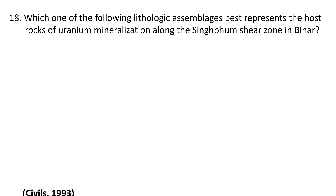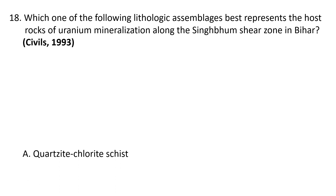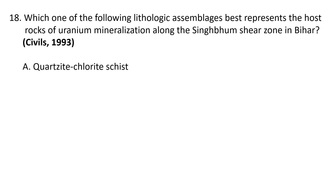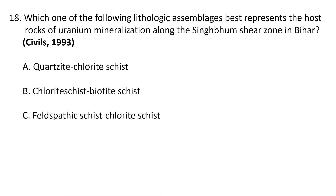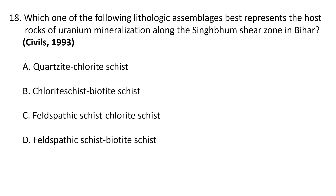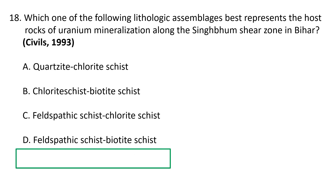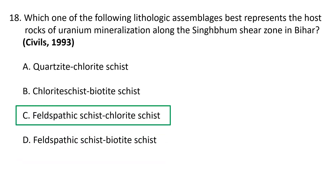Next question: Which one of the following lithologic assemblages best represents the host rocks of uranium mineralization along the Singhbhum Shear Zone in Bihar? — asked in Civil Services 1993. A. Quartz-chlorite schist, B. Chlorite schist-biotite schist, C. Feldspathic schist and chlorite schist, D. Feldspathic schist and biotite schist. The correct answer is C — feldspathic schist and chlorite schist represents the host rock of uranium mineralization along the Singhbhum Shear Zone in Bihar.